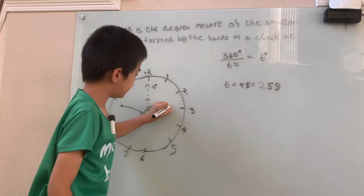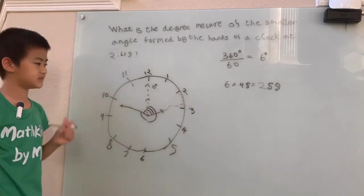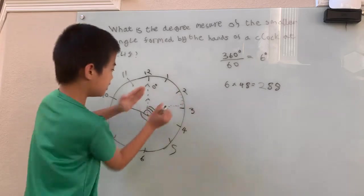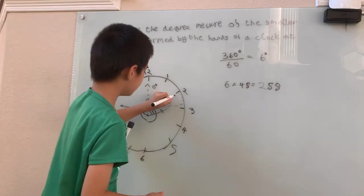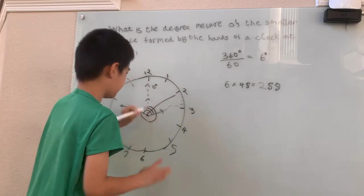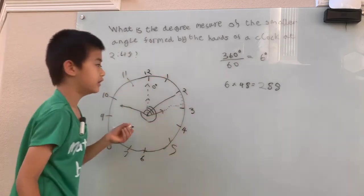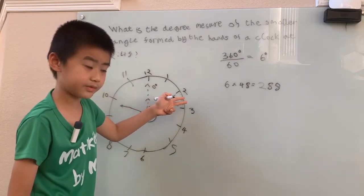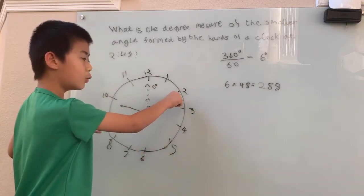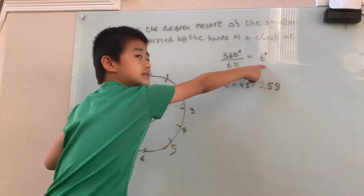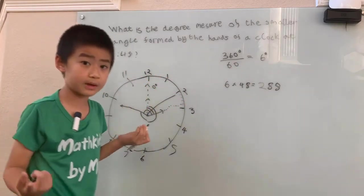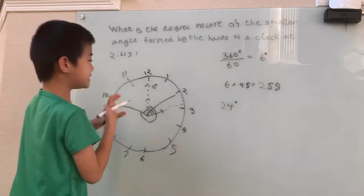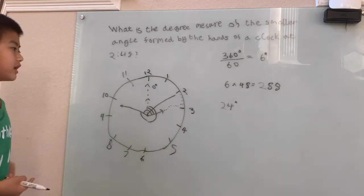The hour hand is pointing right there at the fourth space. And that means this whole bit right there, this little bit, just that little bit right there, that's one of these little tick marks is 6 degrees. We have four of those little 6 degrees. That means that's 24 degrees.